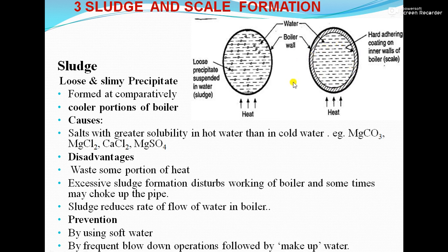What are the causes of sludge? Sludges are formed due to salts with greater solubility in hot water than cold water — like magnesium carbonate, magnesium chloride, calcium chloride, and magnesium sulphate.